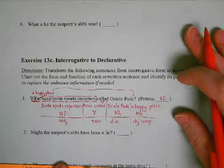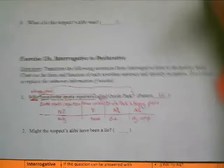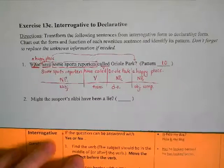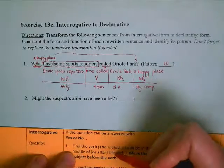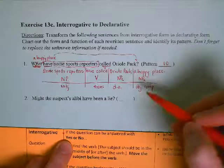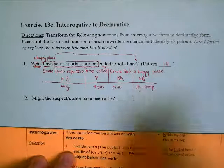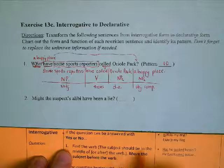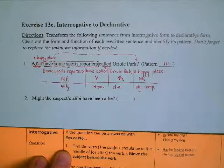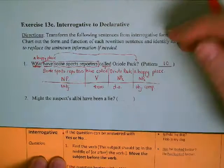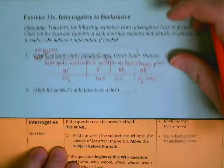In class we'll do three, four, and five, and six through ten will be your independent practice. 'Might the suspect's alibi have been a lie?' Can I answer that question with yes or no? Yes, it was a lie. Since it's a yes or no question, it says find the verb. The subject should be in the middle of or after the verb. Move the subject before the verb.